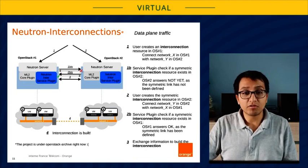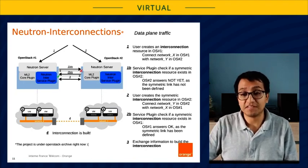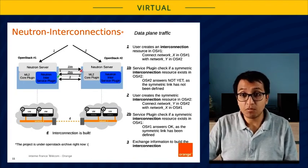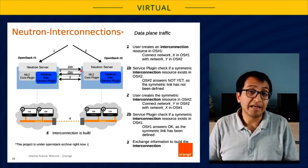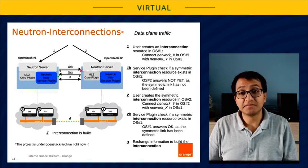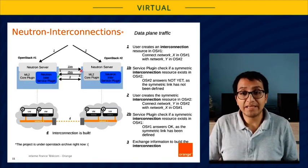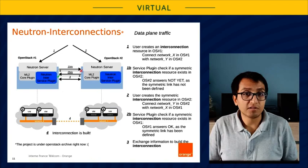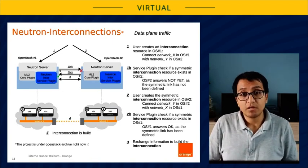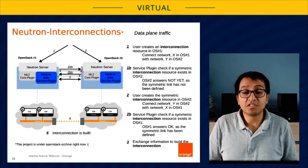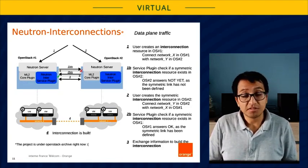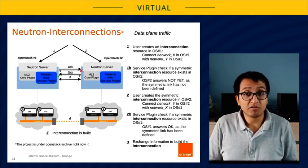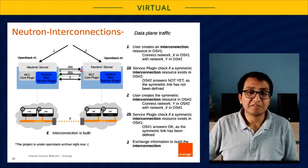One interconnection object is created for each pair of local resource and remote resource. In the case of a Layer 3 routing resource composed by three sites, each site will have two interconnection objects. For an interconnection to be in active state, the user needs to create the initial interconnection and the symmetrical one in the remote Neutron. The service plugin will check if the symmetric interconnection exists, and once it is verified, they will exchange the route target identifiers.